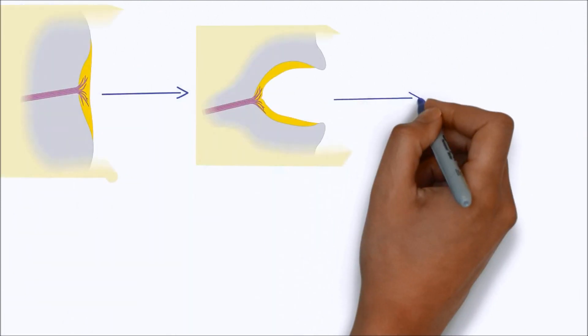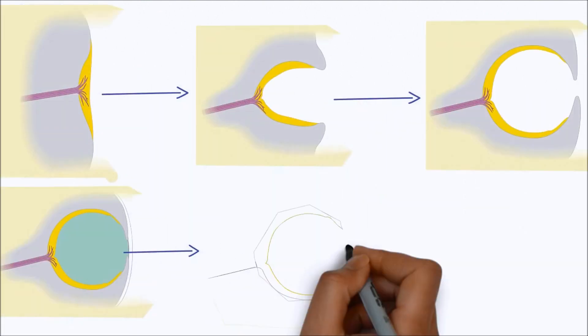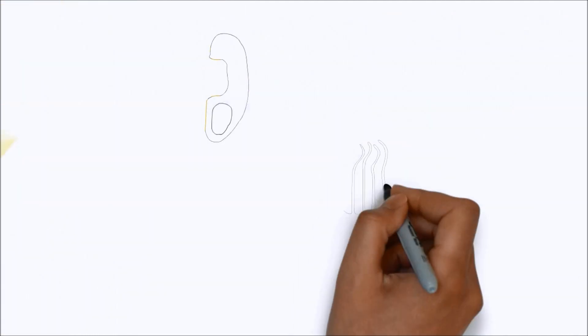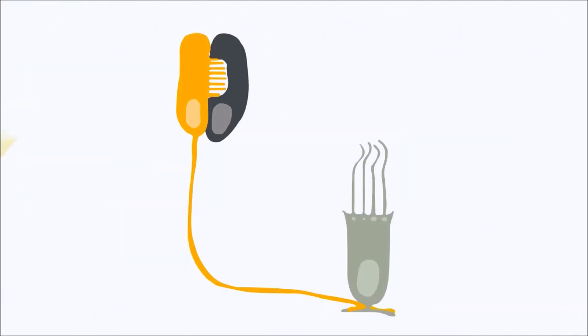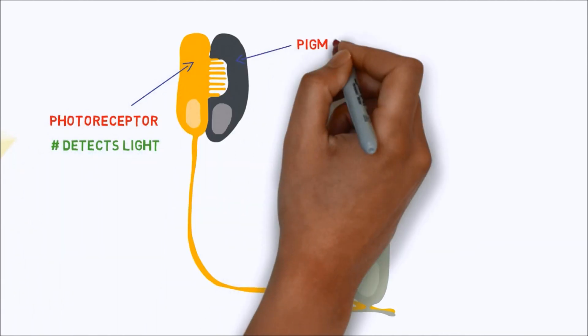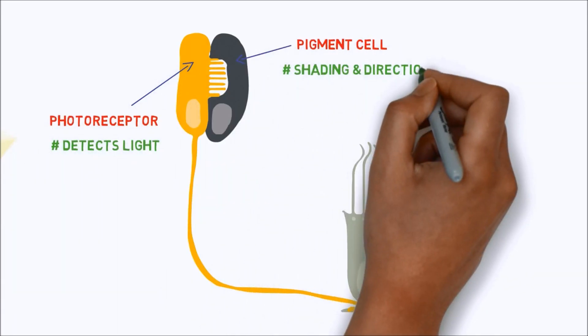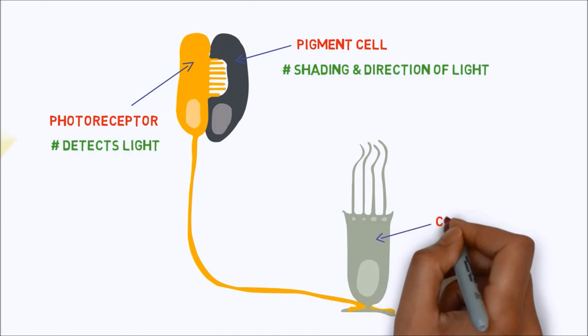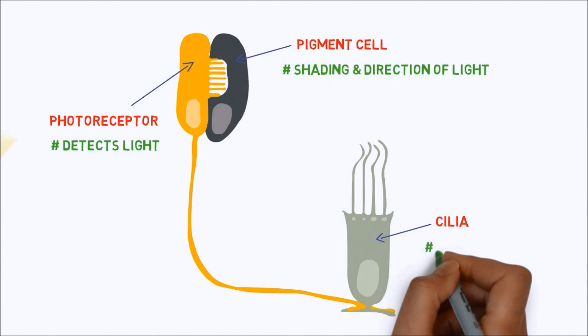This allows for the step-by-step evolution of increasingly complex eyes. The most basic structure that is widely accepted as an eye has just two cells: a photoreceptor that detects light and a pigment cell that provides shading and senses the direction of light. The photoreceptor connects to ciliated cells which engage to move the animal in response to light.